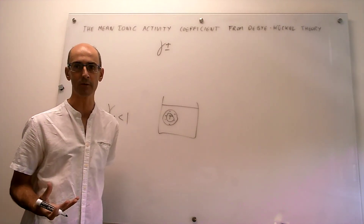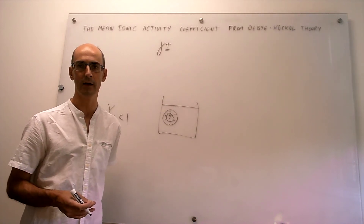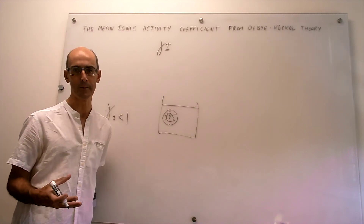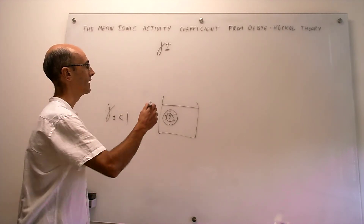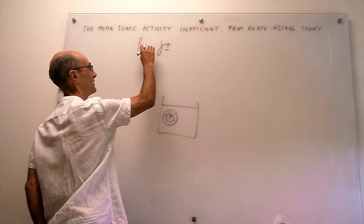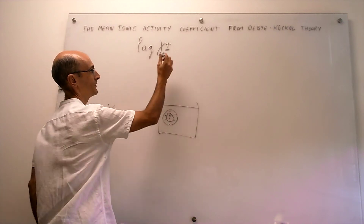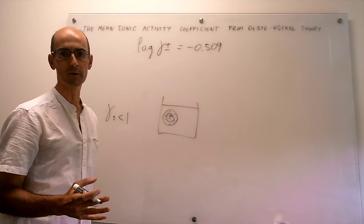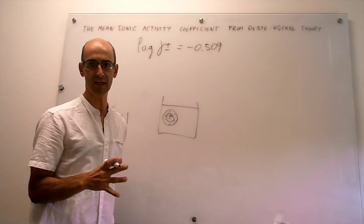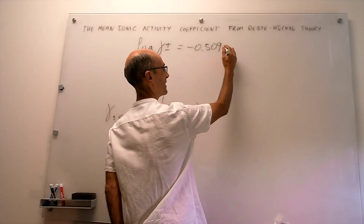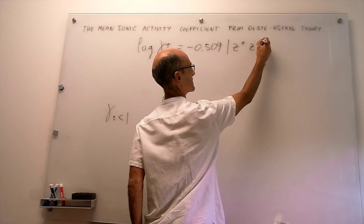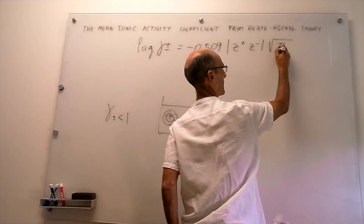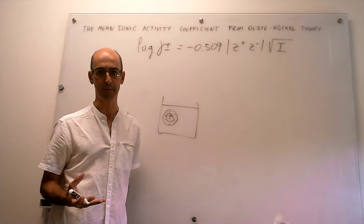After that introduction, we can simply write the Debye-Hückel equation to calculate this mean ionic activity coefficient. For water at 298 Kelvin, the calculation is as follows: the base-10 logarithm of the mean ionic activity coefficient equals a constant — which changes according to solvent and temperature, so this only applies for aqueous solutions at 298 Kelvin — times the absolute value of the product of the charges z+ and z−, multiplied by the square root of the ionic strength I.